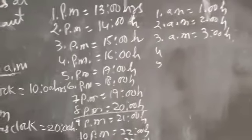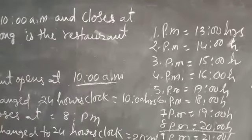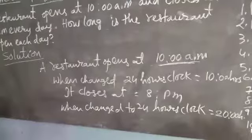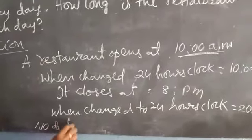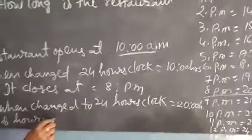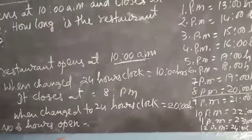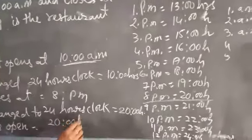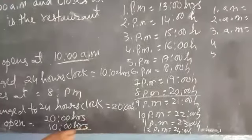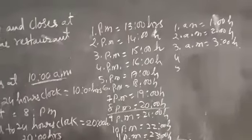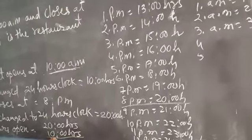How long is the restaurant open each day? Number of hours open — you have to write: 20 hours minus 10 hours. 20 minus 10 is 10 hours.